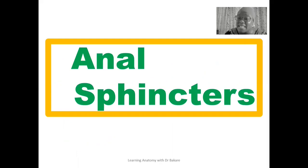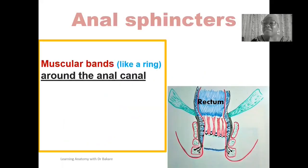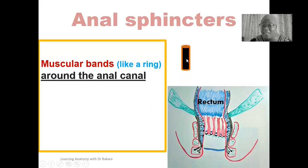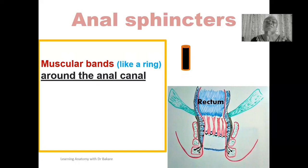In this lecture, we'll be looking at the anal sphincters. The anal sphincters are muscular bands that are seen to surround the anal canal. So they are seen like a ring surrounding the wall of the anal canal.